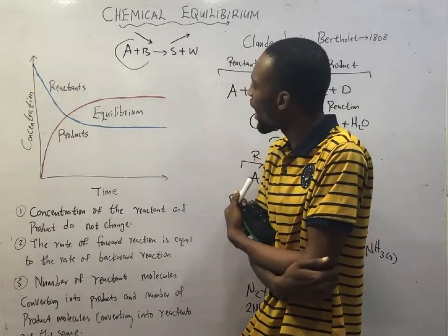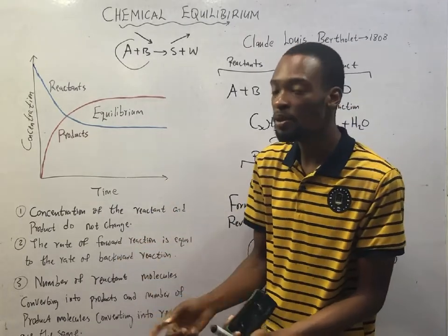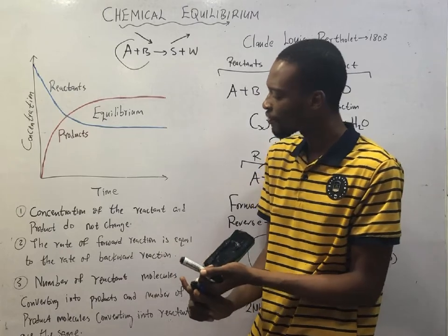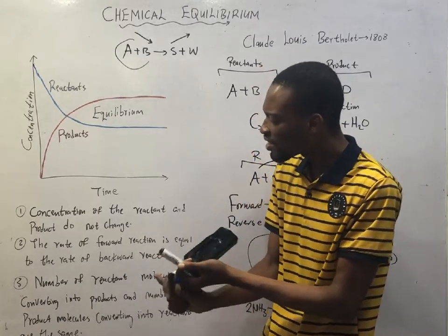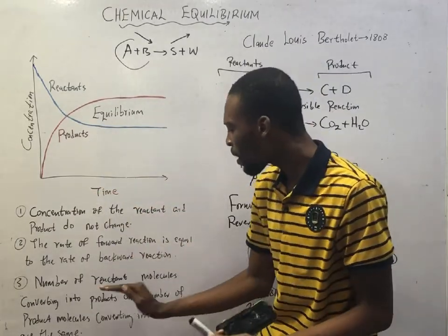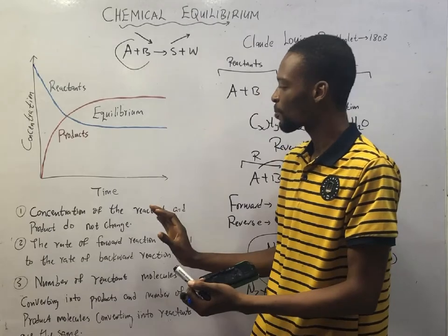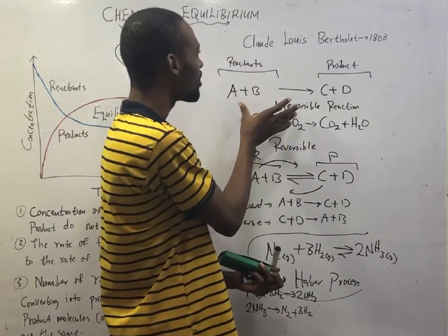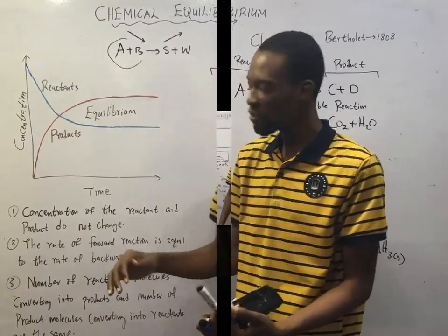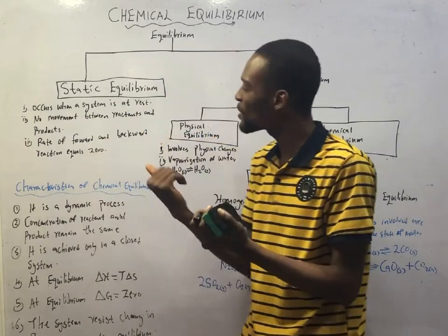Chemical equilibrium is the stage where the concentration of the reactants and products do not change. Any of the following definitions will be accepted: Chemical equilibrium occurs when the rate of the forward reaction equals the rate of the backward reaction, or when the number of reactant molecules converting into products equals the number of product molecules converting into reactants. Equilibrium is the state of a system when there is no observable change in properties with respect to time.